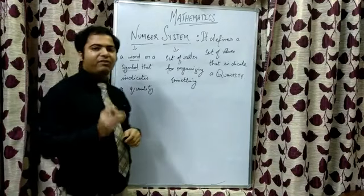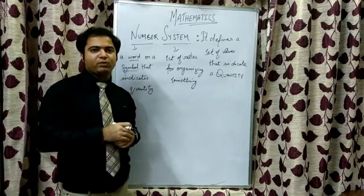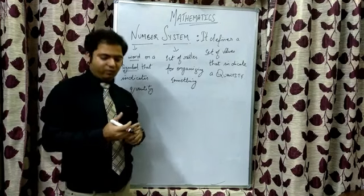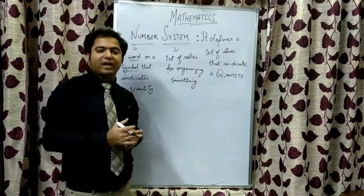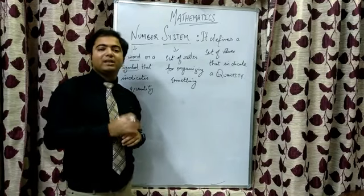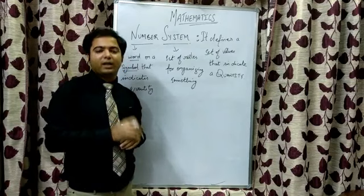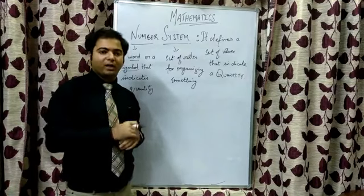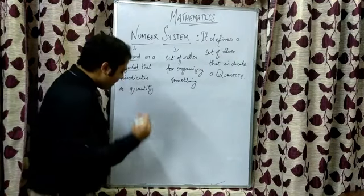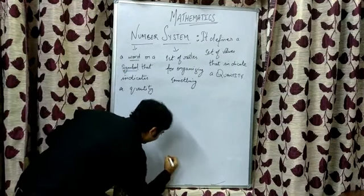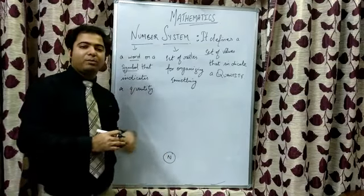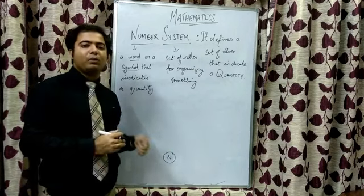We will start with the very first and basic numbers taught to us when we were small. Like we started learning about numbers right from class prep and began with 1, 2, 3, 4, 5, 6, and so on. These numbers are called counting numbers. In mathematical terms, they are termed as natural numbers, denoted by capital N. Natural numbers are all positive in nature and they start with 1.